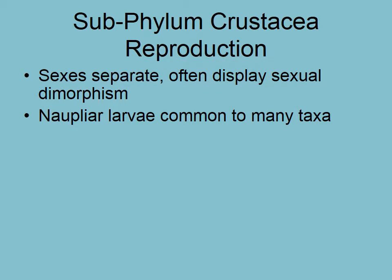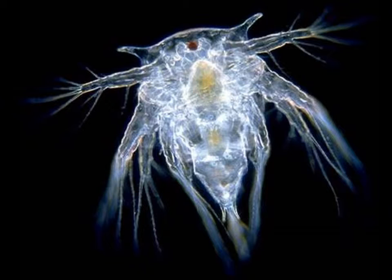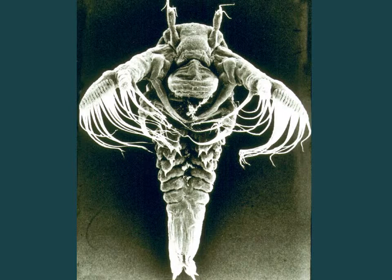Crustaceans are usually not only dioecious but often have a very distinct difference between male and female — unlike a sea star, where you can't tell the difference. They also have the nauplius larvae, which is common to almost all crustaceans. It has a single eyespot, a couple of spikes for protection, and little appendages with setae at the end. Even these early larval stages must go through many molts.